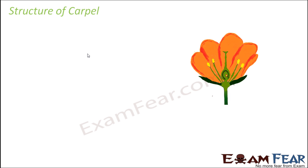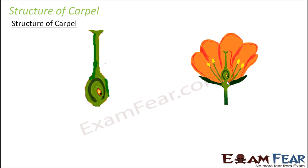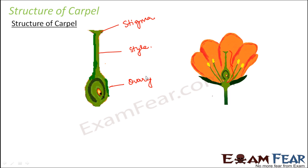Let us first understand the structure of carpel. Carpel and pistil mean the same thing. This entire central structure is the carpel. Carpel is broadly divided into three parts: the upper swollen portion is called stigma, the tube-like structure is called style, and the swollen bottom portion is called ovary. So stigma, style, and ovary are the three major regions of the carpel.